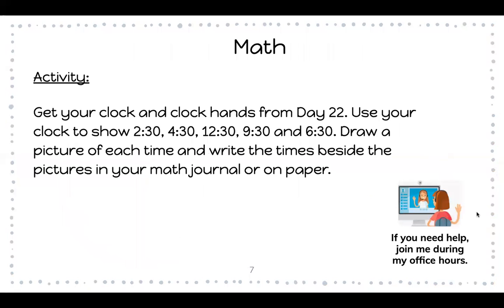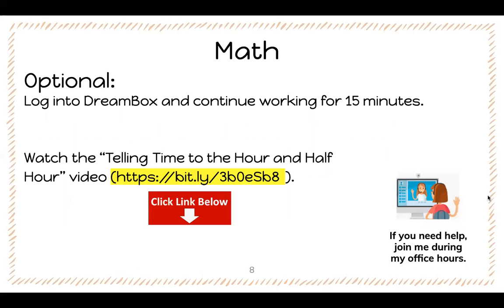So again, get your clock and clock hands from day 22. Use your clock to show 2:30, 4:30, 12:30, 9:30, and 6:30. Draw a picture of each time and write the times beside the pictures in your math journal or on paper. I already showed you 12:30 and 6:30 in this video, so you only have a few more left to do. If you need any help, make sure to join us during our office hours. Your optional work is to log into Dreambox and continue working for 15 minutes, and you can watch the telling time to the hour and half hour video in the link below.